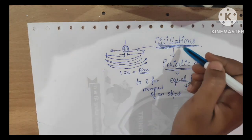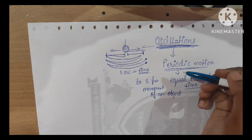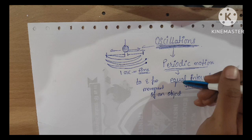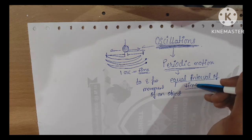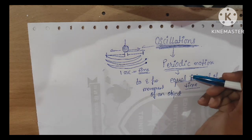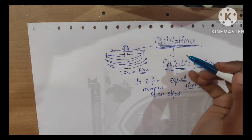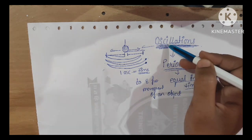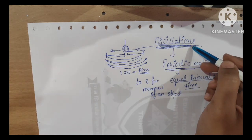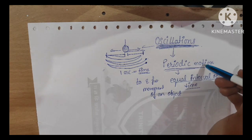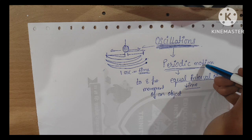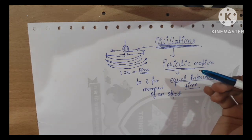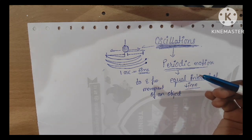Periodic motion repeats every time. Every equal interval of time, there is a repetition of the same motion. This motion is called oscillation, or you can say periodic motion, or vibrational motion also.